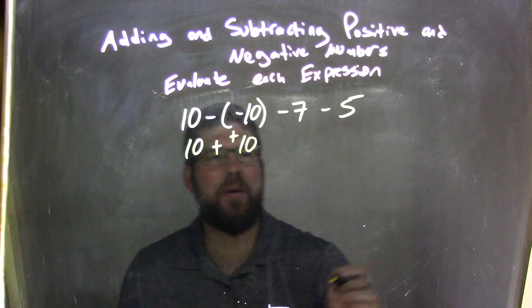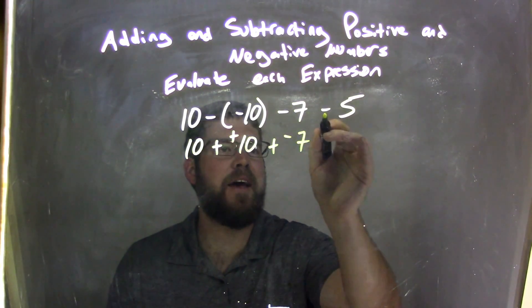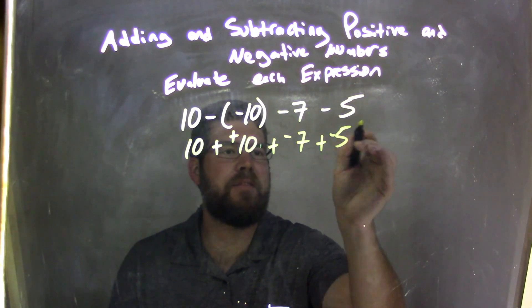Now, this is what I'm going to do. I'm going to write this subtraction as plus a negative, plus a negative 7 and negative 5, plus a negative 5. You'll see why in a minute.